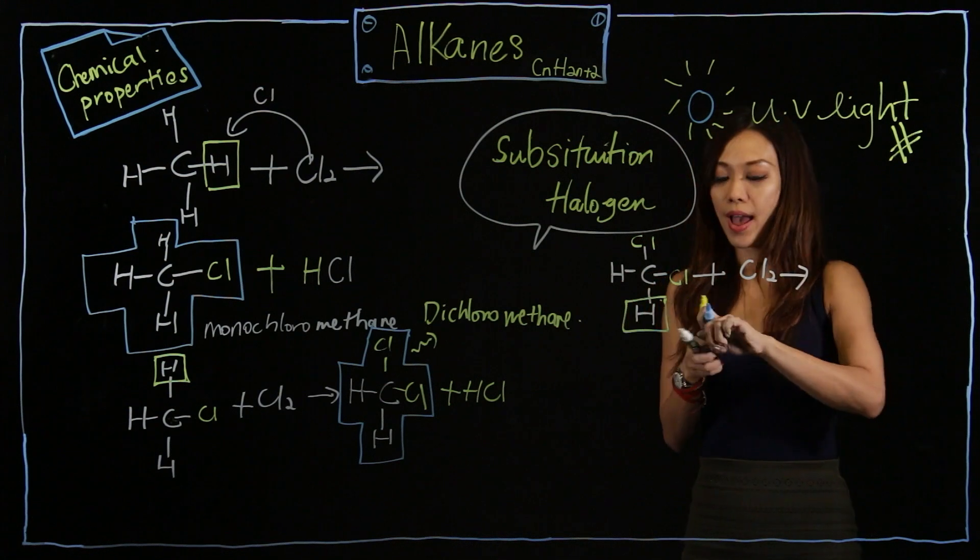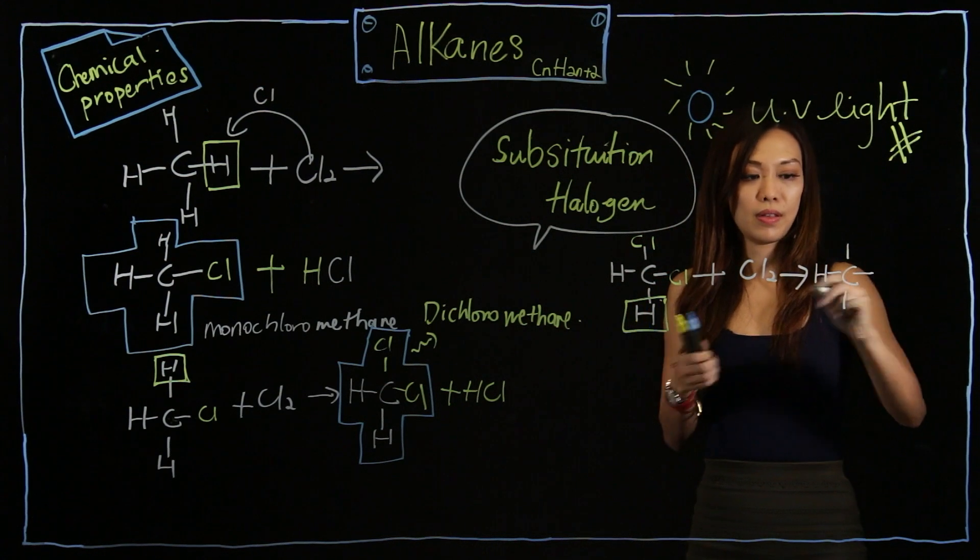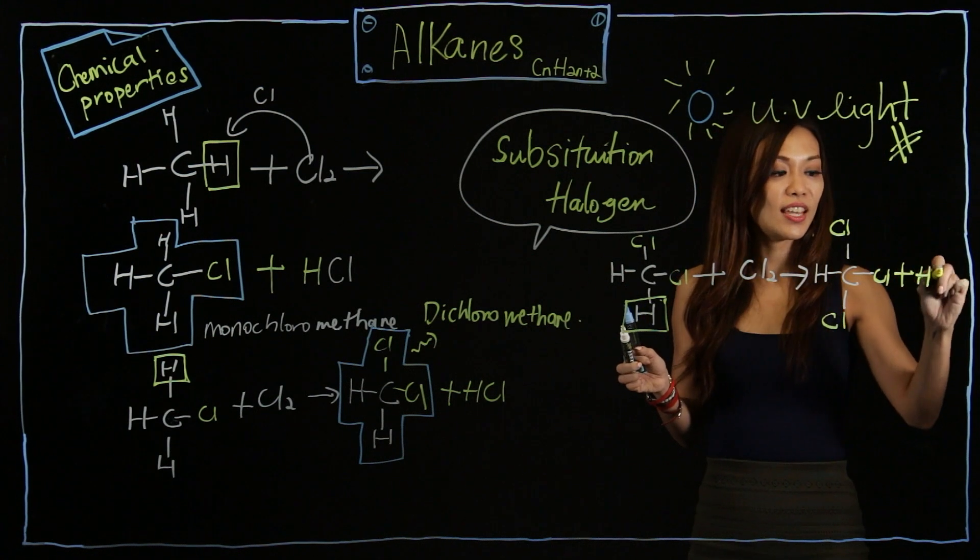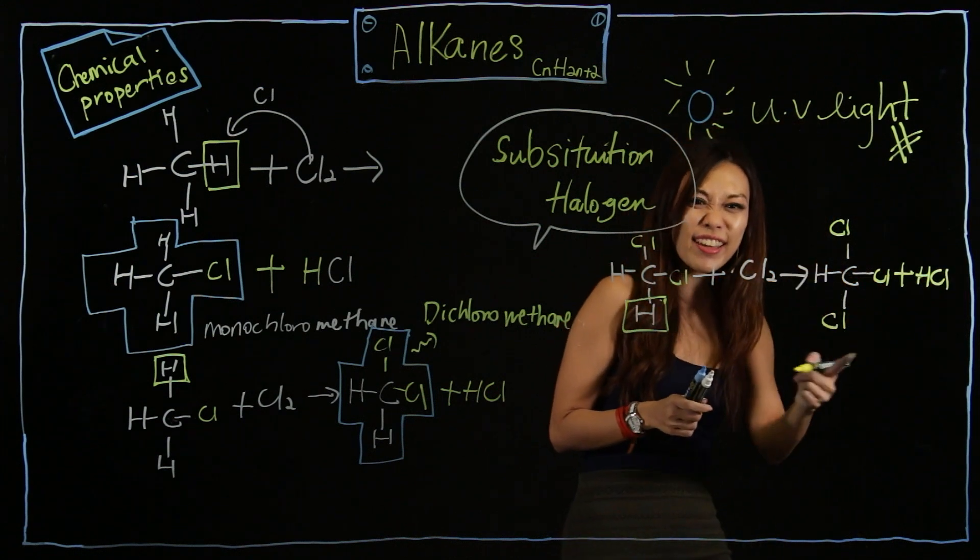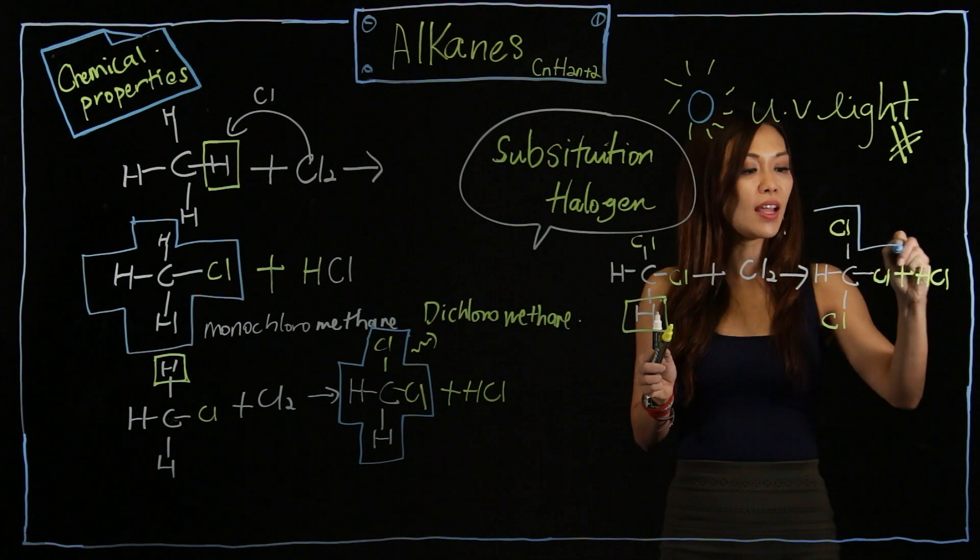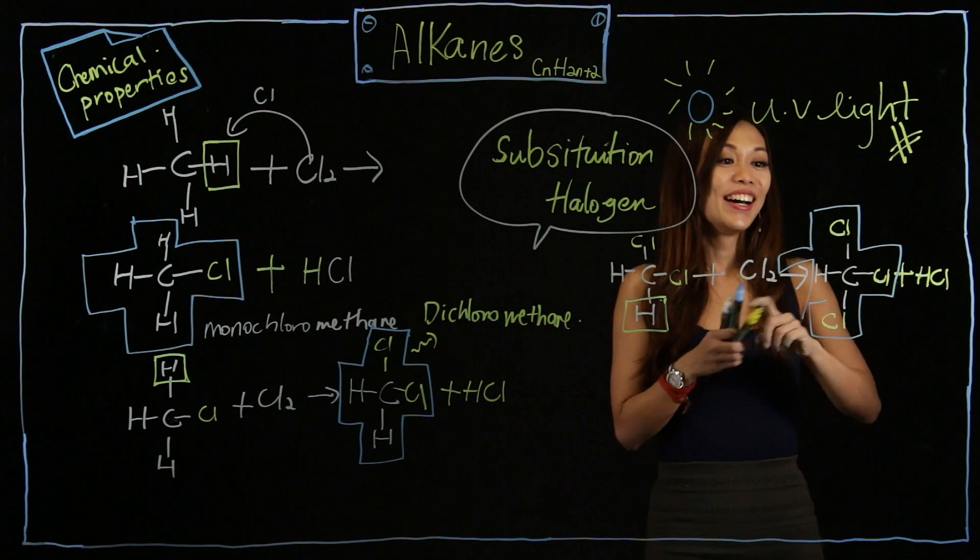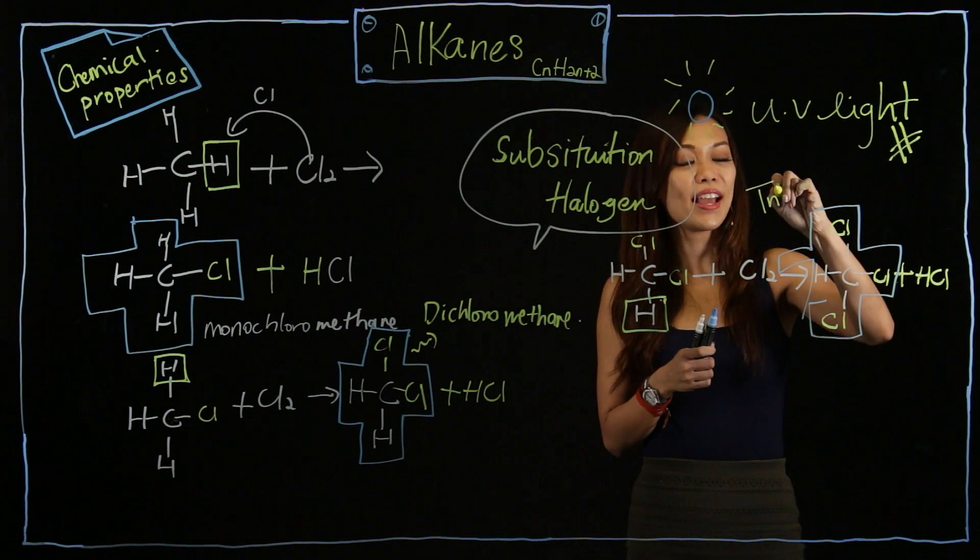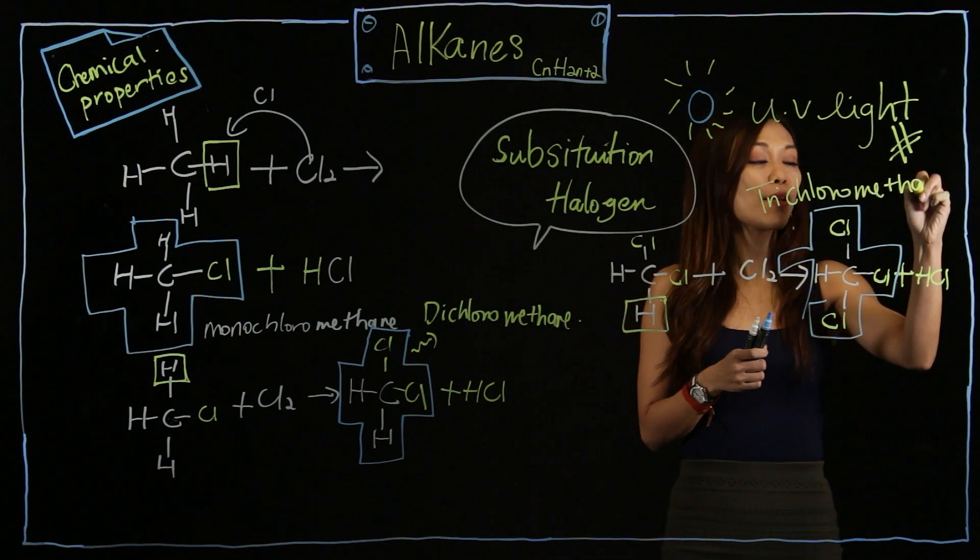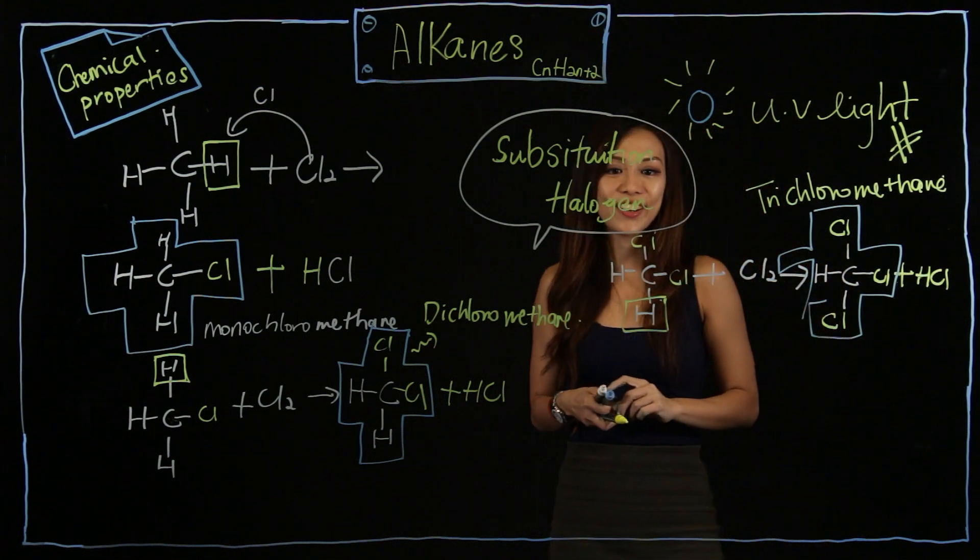So I will have Cl, Cl, Cl, plus HCl. Hey, now I got three. Almost done. So what is the name for this? Think about it. This is actually called trichloromethane, just like triangle got three sides. You have three Cl. Trichloromethane.